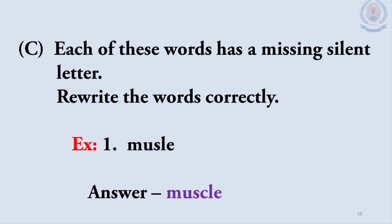Part C: Each of these words has a missing silent letter — rewrite the words correctly. For example, the first word is 'muscle.' What silent letter is missing here? It is letter C. So the answer is M-U-S-C-L-E, 'muscle.' The missing silent letter is letter C. Now turn to page number 37 in your workbook, where you are given three activities: Part A — underline the silent letter in each word; Part B — underline the word in each sentence that has a silent letter; Part C — rewrite these words correctly.